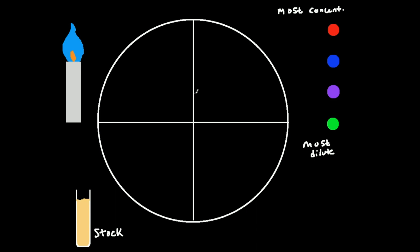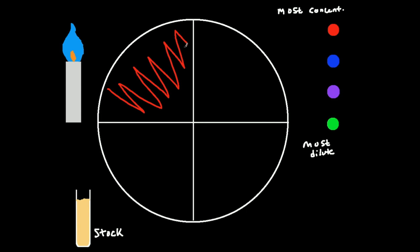The important thing to remember: you're only going to dip your inoculating loop in the stock one time. So the first thing I'm going to do is put my loop in the flame, sterilize it, make sure it's good and germ-free, take it out, and let it sit for about 10 seconds — that's the golden rule for letting it cool down enough. Then I'm going to dip it into the stock solution. That's the only time I'm going to dip it in. Then I'm going to streak in a zigzag fashion in one of these quadrants. That's the only time I ever dip my inoculating loop in the stock, so I no longer need the stock.